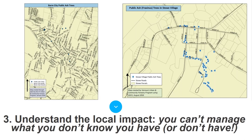Third, how can you manage what you don't know you have? We worked with about 30 towns to do downtown street and park tree inventories. When EAB was detected this winter, I could use that inventory data to assess impact — Barre City has just about 15 public ash in 500 trees total, while about 50 percent of Stowe's downtown trees are green ash. Because these towns inventoried their trees, they know what they'll be dealing with when the pest arrives.